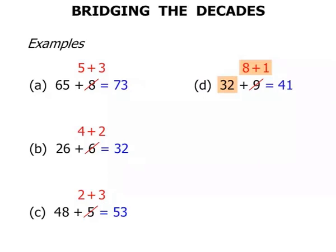84 plus 8. 84 to start with. We need to bridge the decade. We need to get to 90. We do that by adding 6. So the 8, let's break it up into 6 and 2. So then we have 84 plus 6, that's 90. Plus 2 equals 92.